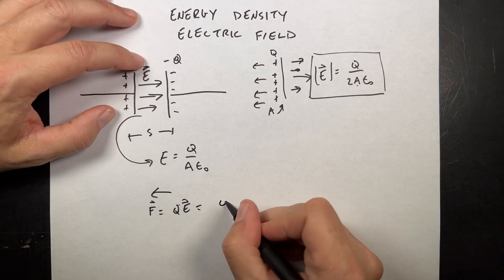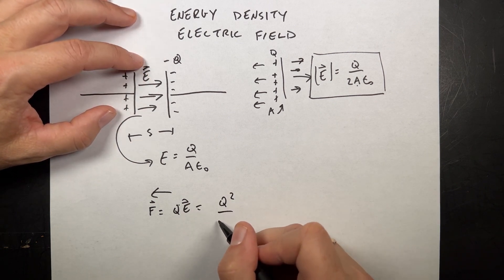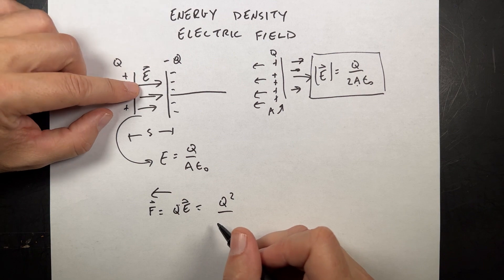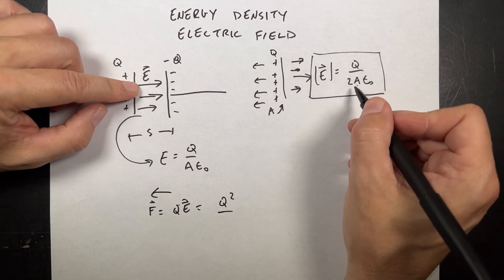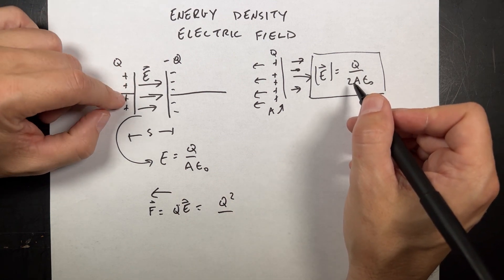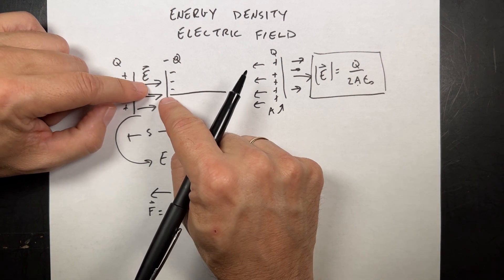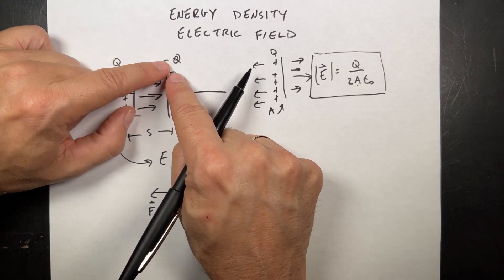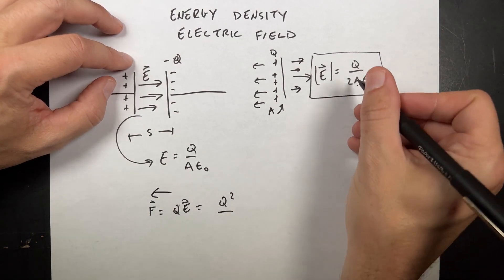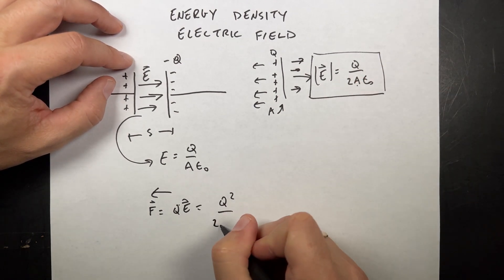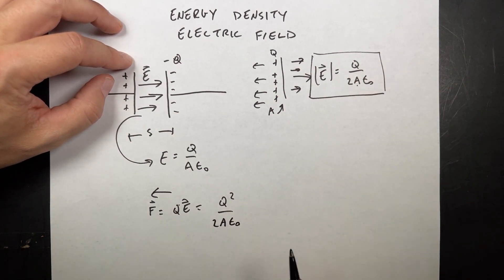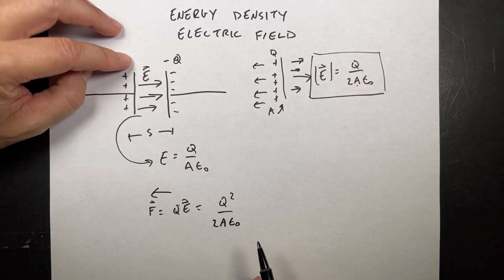So it's going to be Q squared over... But the E is this E, right? Because it's the electric field due to this plate. I can't have the total electric field. I can't have the electric field due to this plate and the force on that plate. So it's just going to be this electric field, 2A epsilon naught. Q squared over 2A epsilon naught. That's the force.